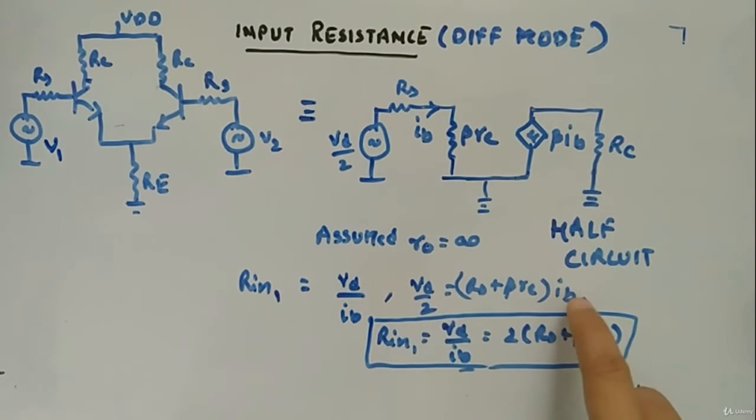Now we are interested in Vd by Ib, so Vd by Ib will be 2 into Rs plus beta Re. This will be Rin1, the differential mode resistance which we are more interested in.